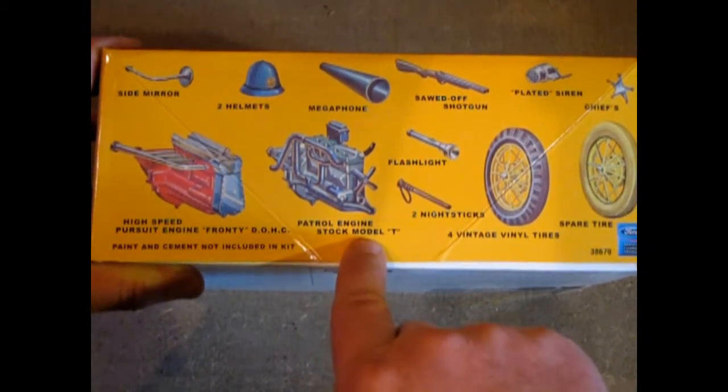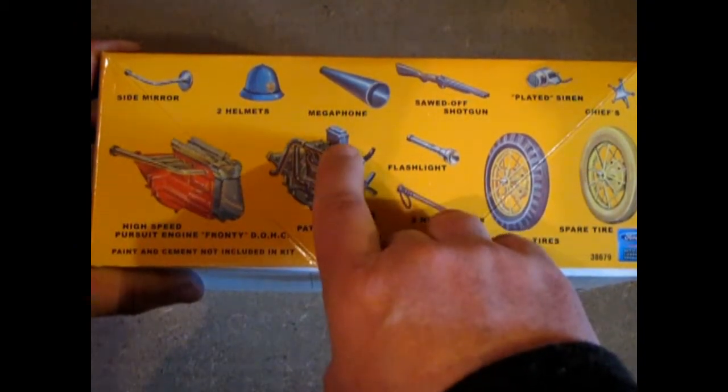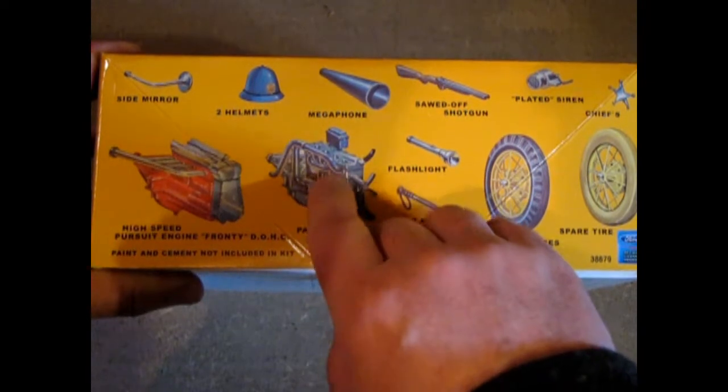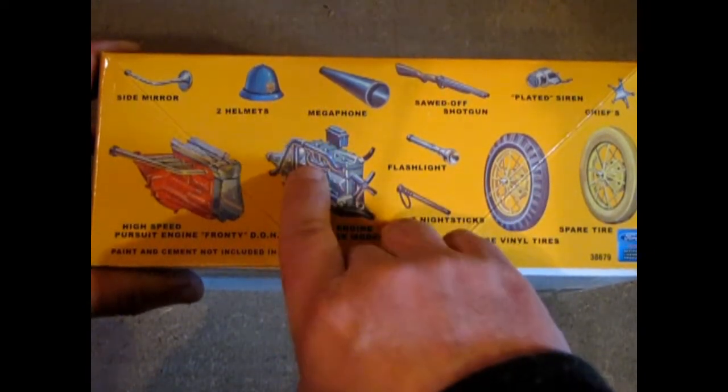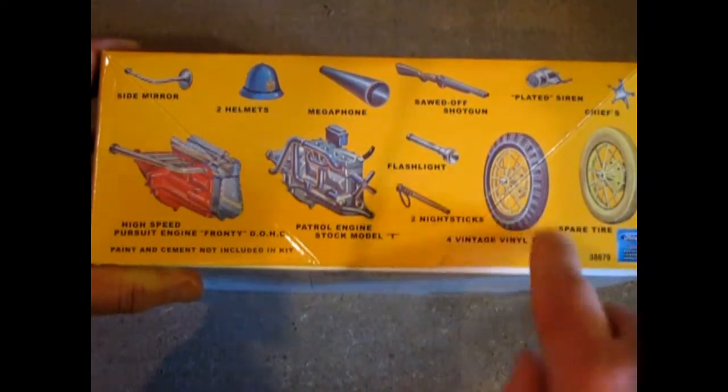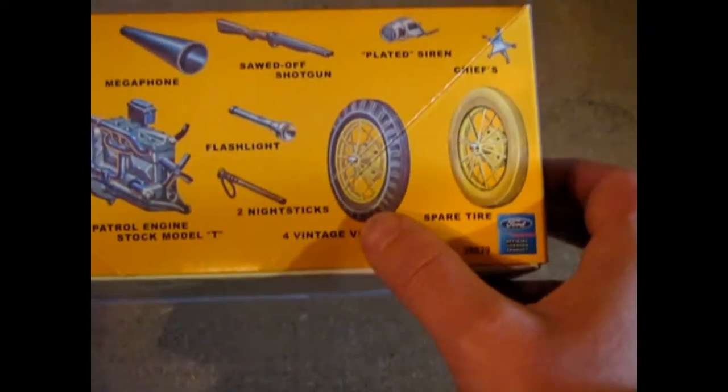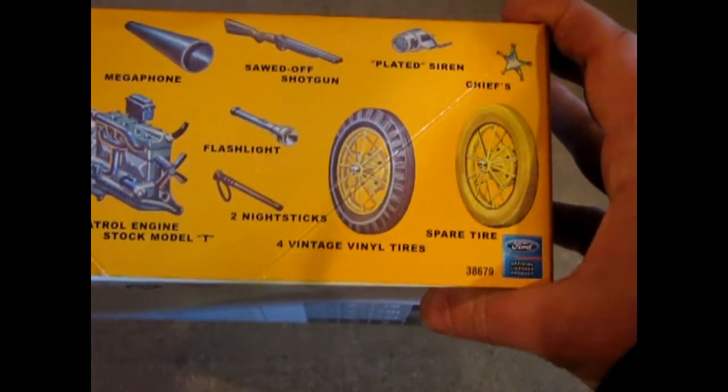And then of course they give you the patrol engine with the stock motor. This was the buzz box. They had moved it off the firewall and put it on the engine. If you look at a real one there's actually 4 wires along that side that go to each of the spark plugs. And then of course you've got your wire wheels. The 27 Model T kit is the only version with wire wheels.